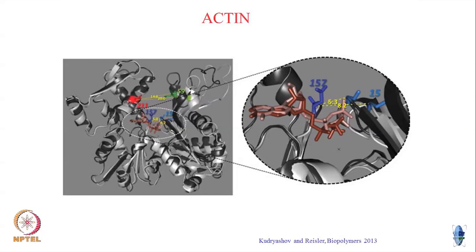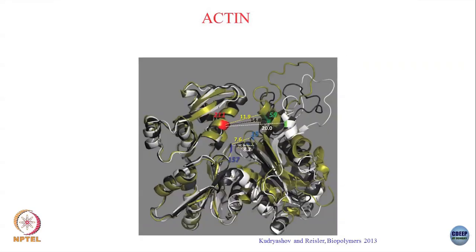Similarly, if you look at G-actin in solution versus G-actin on the filament, you will see certain structural differences. The yellow positions show amino acids in the globular form and the white positions show amino acids when actin is polymerized to form F-actin. This polymerization leads to certain structural changes that contribute to the stability of this filamentous assembly.